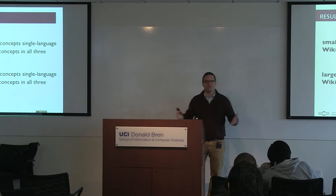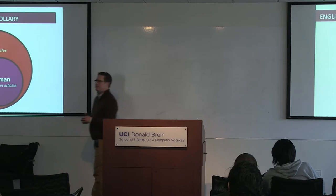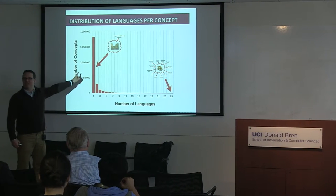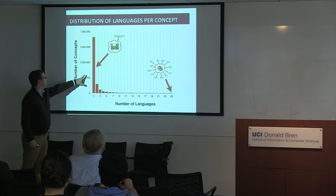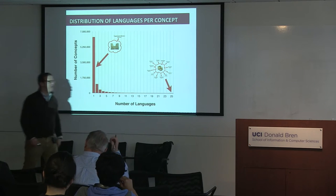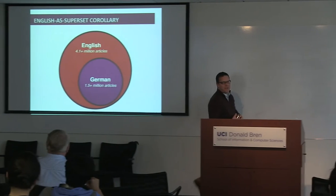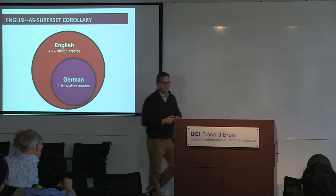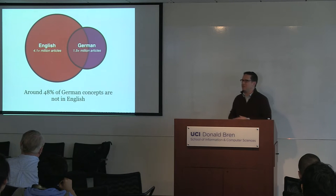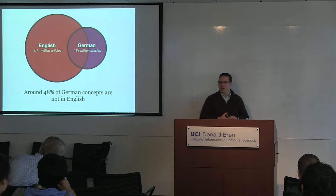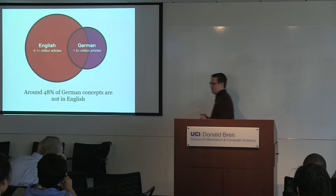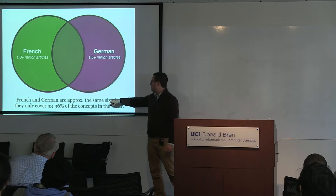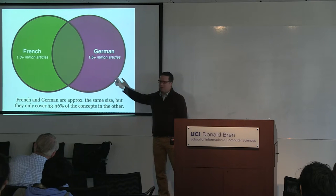One challenge you might raise: English is three times the size of the next Wikipedia, so maybe all this uniqueness is just stuff only in English — what we call the English-as-superset corollary. But when we do a pairwise analysis across all language editions, that's not the case. Around 48% of German concepts are not in English. We're still seeing a great deal of uniqueness even compared to the largest Wikipedia. Similarly, about 33 to 36% of concepts between French and German are covered in one another.